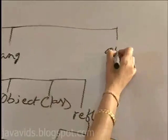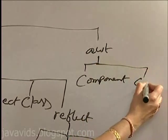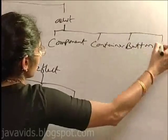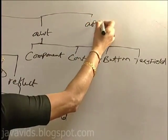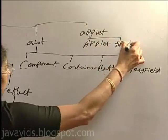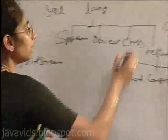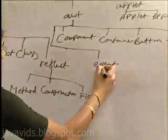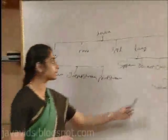You have the AWT package which consists of Component class, Container, Button, TextField, etc. You have the applet package which consists of Applet class, AppletContext interface, and so on. Under AWT, we have the event package which consists of a set of event classes. Like this, there are several packages and their classes existing in the JDK kit.